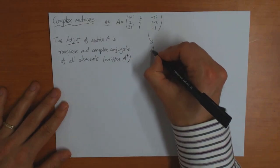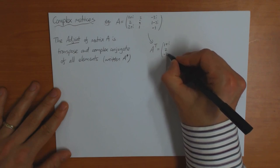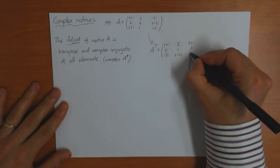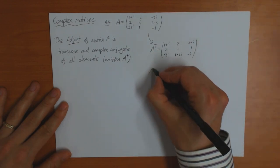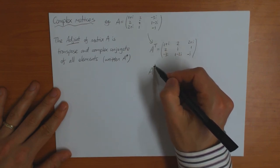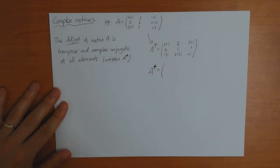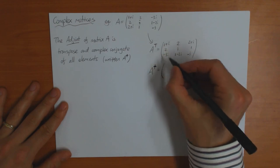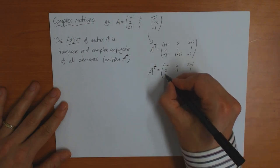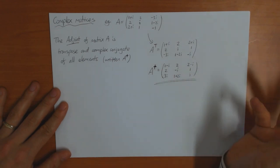For example, taking the transpose swaps rows into columns, and then to find the adjoint you take the complex conjugate of everything — that means you replace all the i's by minus i. So entries like 1 plus i become 1 minus i, 2 minus 3i become 2 plus 3i, and so on. Note that the dagger symbol looks like a cross, whereas the transpose uses a capital T — they are not the same thing.